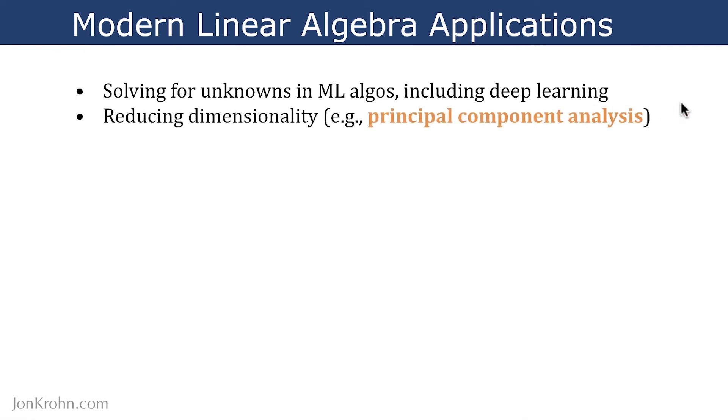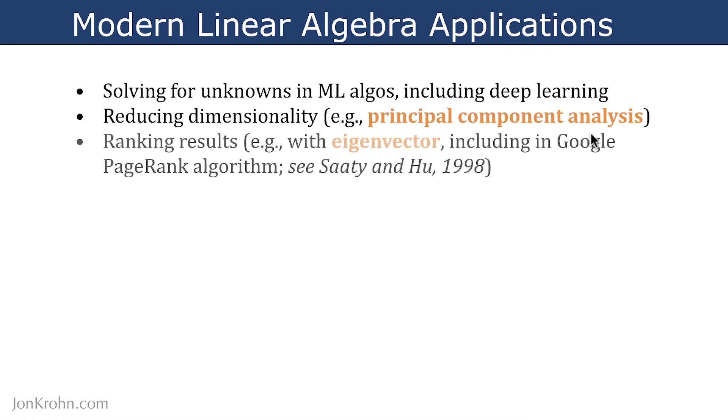We can also use linear algebra to reduce dimensionality. For example, we can do principal component analysis to distill data into its most influential components of data, and that is where we will finish off this subject, linear algebra 2, with principal component analysis. Linear algebra is also great for ranking results. For example, with eigenvectors, including in the Google PageRank algorithm. So you can see this paper here, and we will talk about eigenvectors a lot coming up in the very next segment coming up shortly in this series.